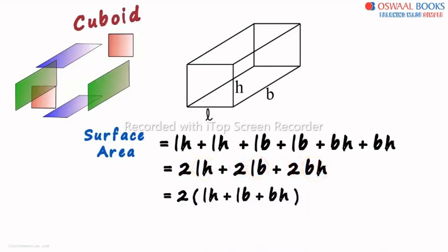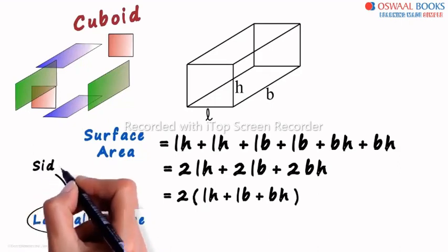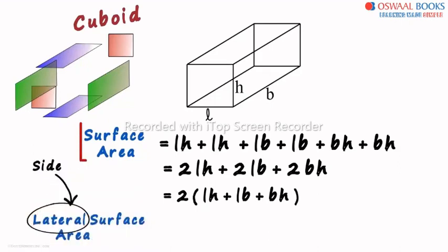That's how simple the concept of surface area is. We just need to look at each surface individually and add their surface areas. Within surface area, there is a concept of lateral surface area. Remember one simple thing: lateral means side. So this would actually mean the surface area of rectangles at the sides.